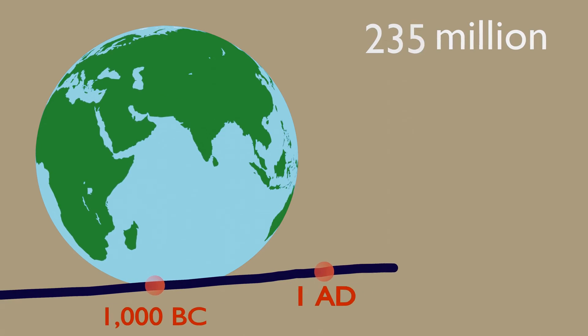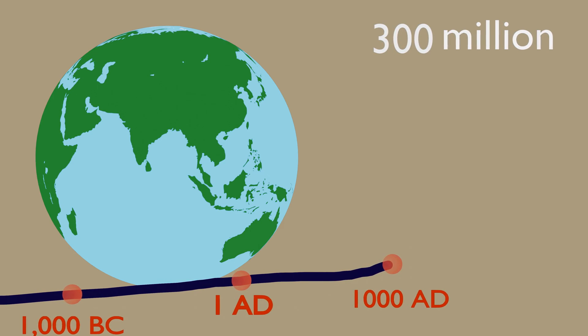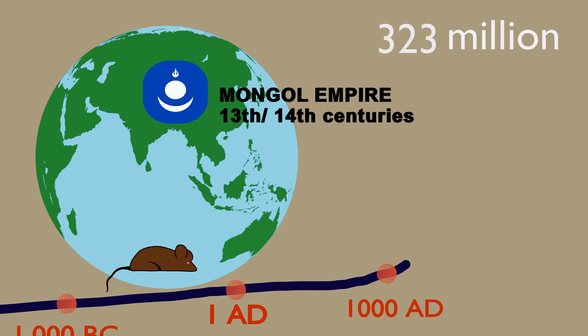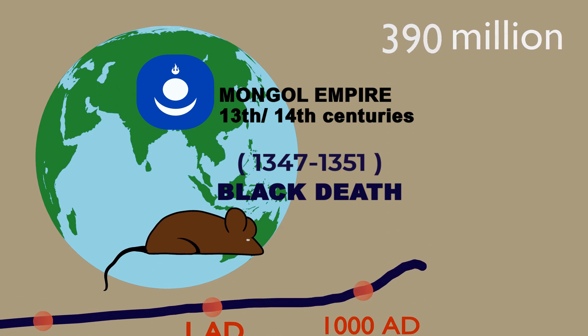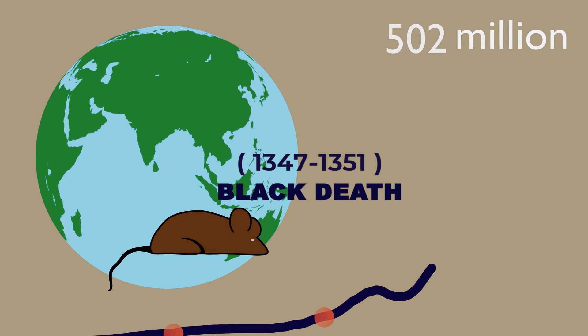In 1000 AD, human population reached 300 million people. In the 14th century, half of European population dropped because of Black Death, but world population increase couldn't be stopped by anything.